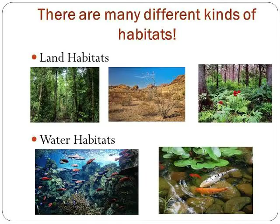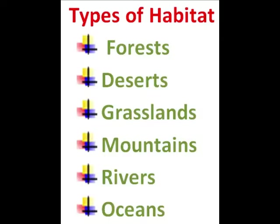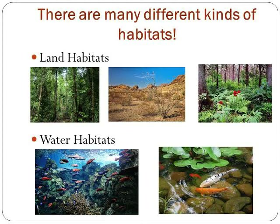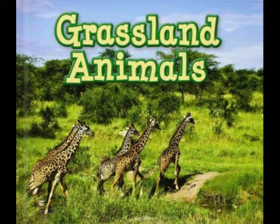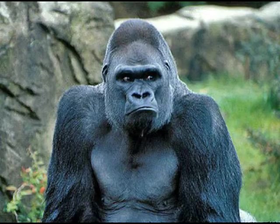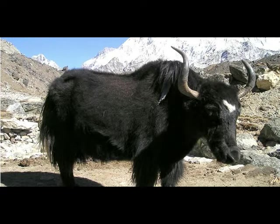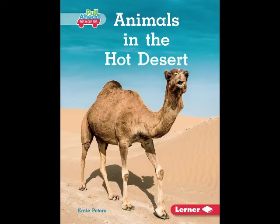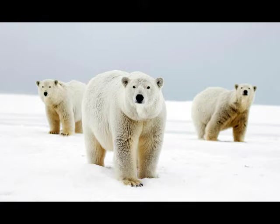Now we are going to study types of habitat. There are five different kinds of habitat on the earth: forest, desert, grasslands, mountains, rivers, and oceans. Each kind of animal lives in a particular type of habitat. For example, blackbucks or cheetahs live only on warm grasslands — they need plenty of open space. But hornbills or orangutans live in dense rainforest. Yaks and snow leopards live in cold high mountain regions, while camels live in sandy deserts. Polar bears live only in extremely cold polar regions.